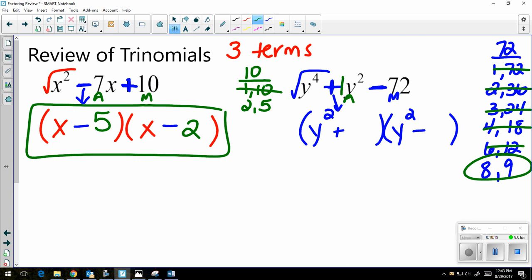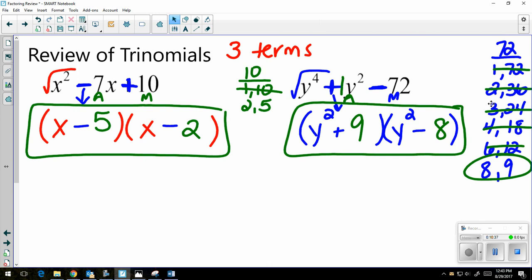And then remember, like I said before, the bigger number has to come first because we've already determined the plus and the minus. So it's going to be a 9 in the first parentheses and an 8 in the second parentheses. So y squared plus 9 times y squared minus 8 is your factored form.